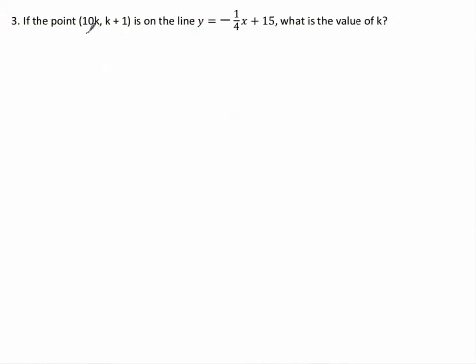Okay, and the next one, we've got a point on the line, and find the value of k. So if this point's on the line, we can just substitute it in, and solve for k. So k plus 1 equals negative 1 quarter times 10k plus 15. So k plus 1 equals negative 5 over 2k plus 15.